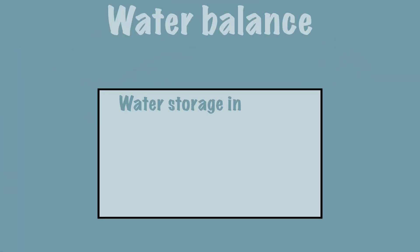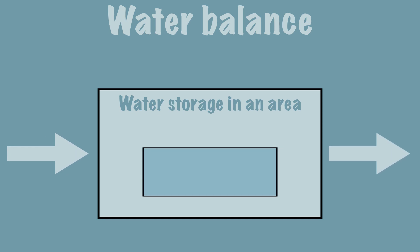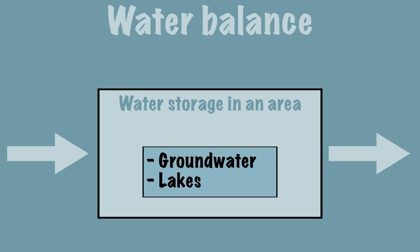The water balance is the inflow to any water system or area, and is equal to its outflows plus change in storage. There is a certain amount of water in an area which is stored, for example in the groundwater or in lakes.